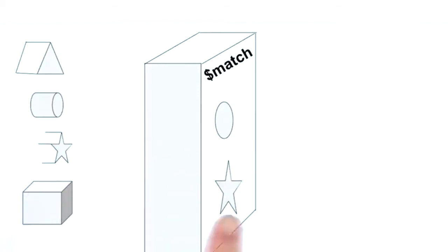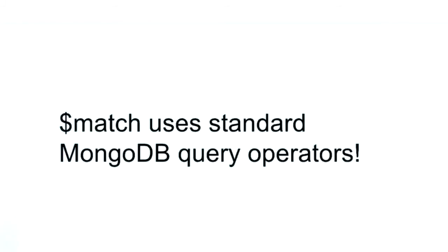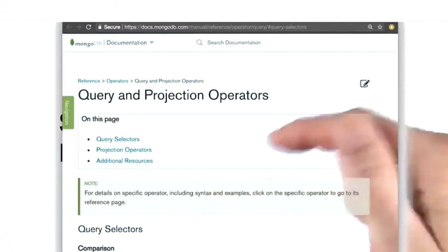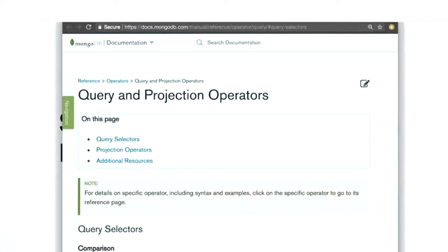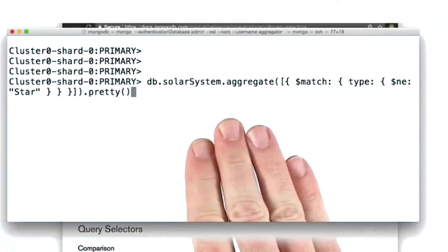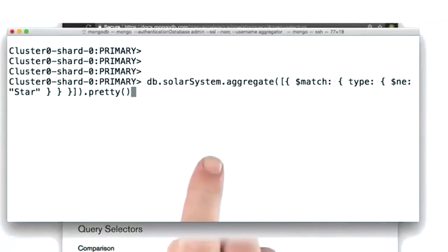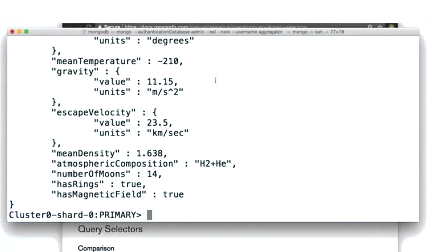Match is a standard MongoDB read operation query syntax. We can perform matches based on comparison, logic, arrays, and much more. The only limitations are we can't use the $where operator, and if we want to use the $text operator, the match stage must be the first stage in a pipeline. If match is the first stage, it can take advantage of indexes, which increases the speed of our queries. Here's an example: executing the following aggregation filters the solar system collection, allowing all documents with types that don't equal 'star' through, and we can see the expected results.